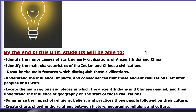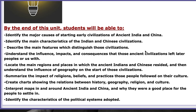Here are the assessment objectives. By the end of this unit, you will be able to identify the major causes that started early civilizations of ancient India and China, identify the main characteristics of the Indian and Chinese civilizations, describe the main features that distinguish those civilizations, and understand the influence, impact, and consequences that those ancient civilizations left on later peoples. You will also summarize the impact of religious beliefs and practices on culture, and create charts showing the relations between history, geography, religion, and culture.